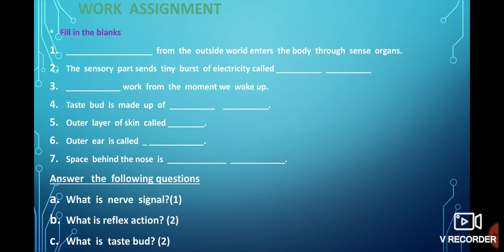And answer the following questions. I have given you three. Just try to solve them. Take the guide from your book and solve them. What is nerve signal which is for one mark. What is reflex action which is for two marks. What is taste bud which is for two marks. And all these things have to be done in your science worksheet copy.